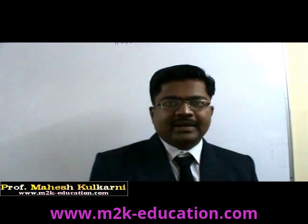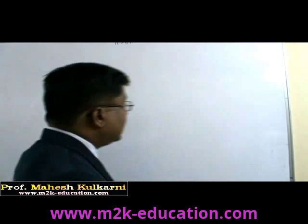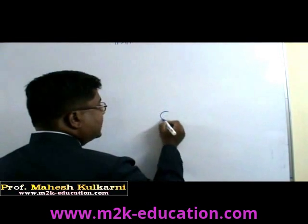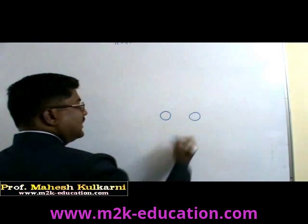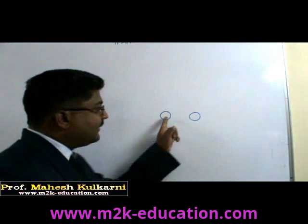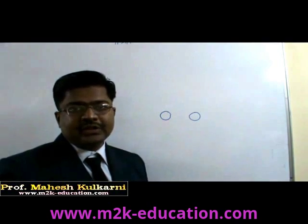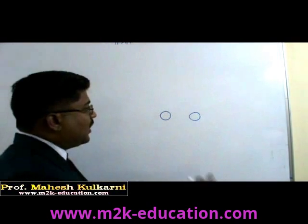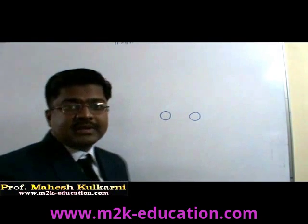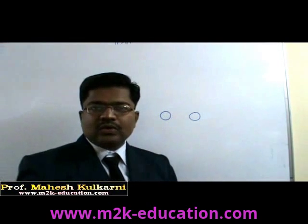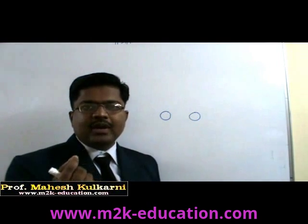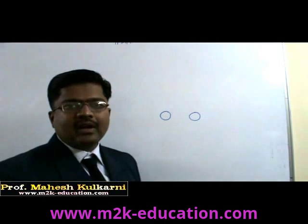What is the meaning of a chemical bond? Say for example, one atom is here and one atom is here. Can we say that there is a chemical bond between these two atoms? The answer is obviously no. In order to get a chemical bond, these two atoms must be so close to each other that there should be overlapping of their orbitals.